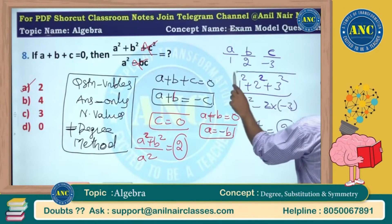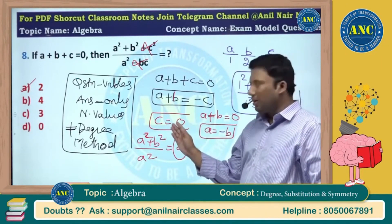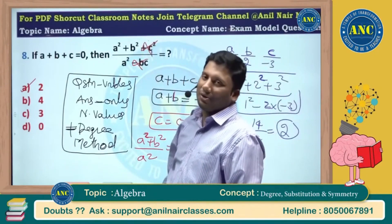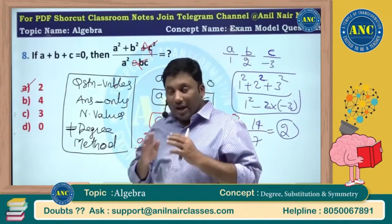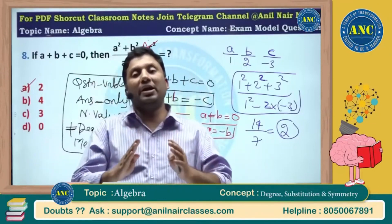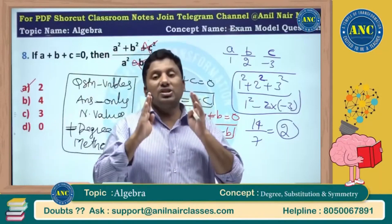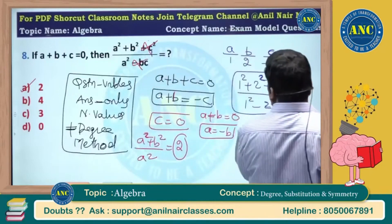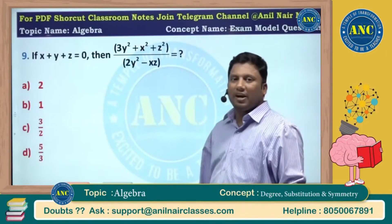It's up to your intelligence — that calculation takes more time. The simpler approach: make c equal to 0, then b equals minus a, and a² plus a² divided by a² gives 2. Make the dependent variable 0 — this concept is used to simplify the substitution method.